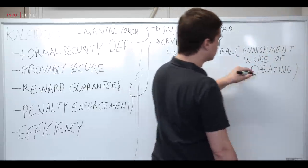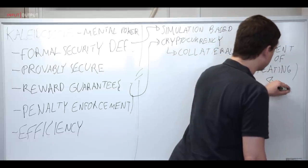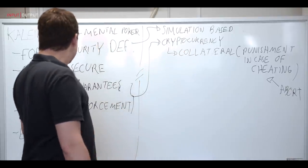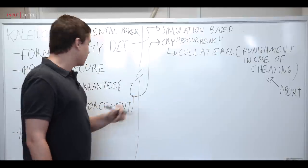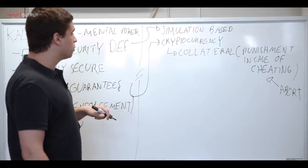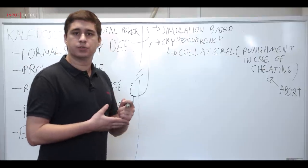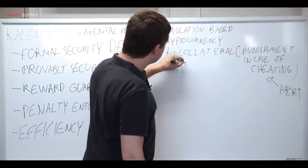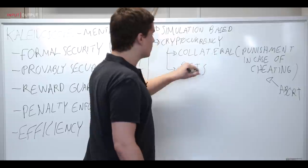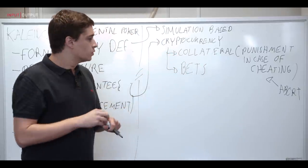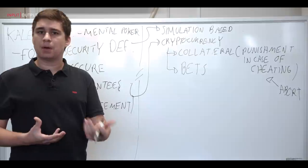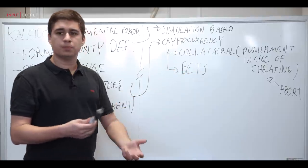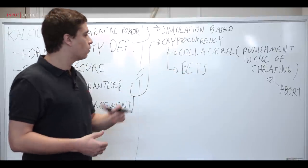So the collaterals are only used as a punishment in case of cheating. Remember that cheating can also be an abort. So we solve the penalty enforcement problems in that way. Now we also have to show that the rewards that a user gets from the poker game are paid. So we also deposit bet money in the form of a cryptocurrency. So we have some coins deposits that are going to be used to bet inside the game. So those bet deposits are going to be distributed among the users who actually win or lose in the game.